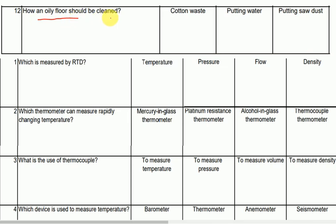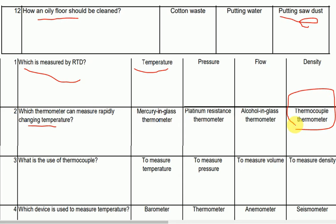How should oily floors be cleaned? Oily floors should be cleaned with water. This handout can be measured by RTD. Which thermometer can measure rapidly changing temperature? The answer is thermocouple thermometer. A thermocouple thermometer can measure both high and low temperatures, and its use is to measure temperature.